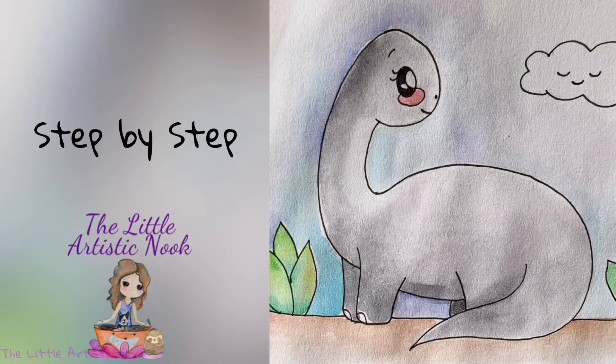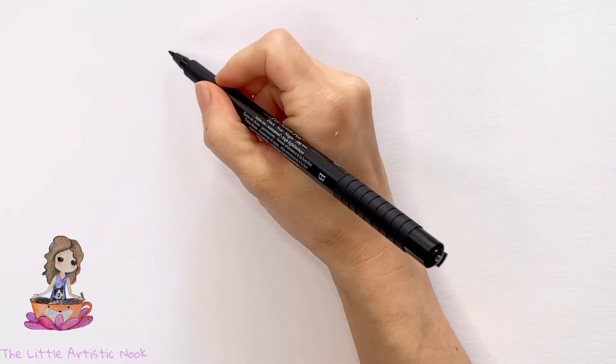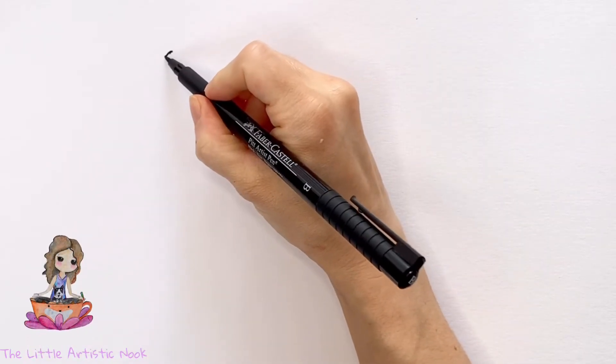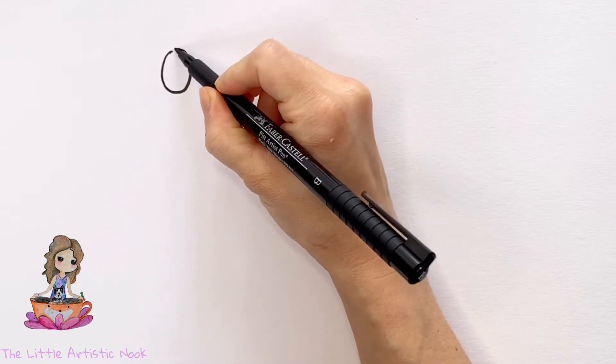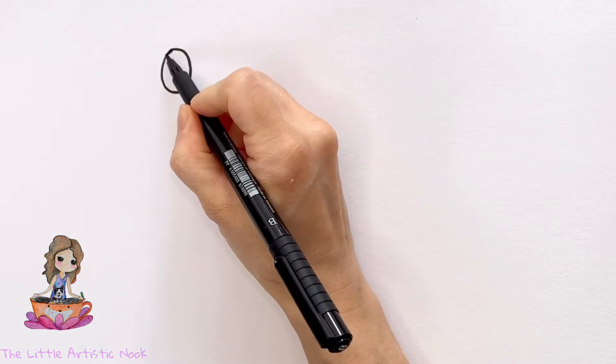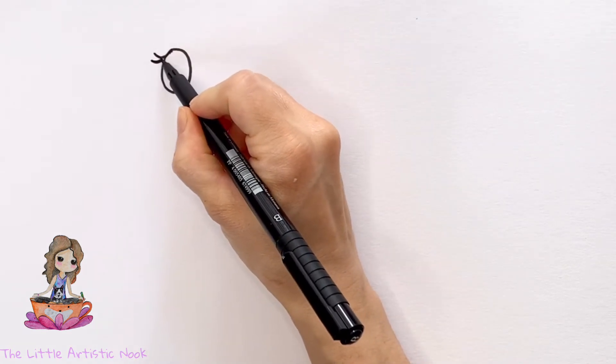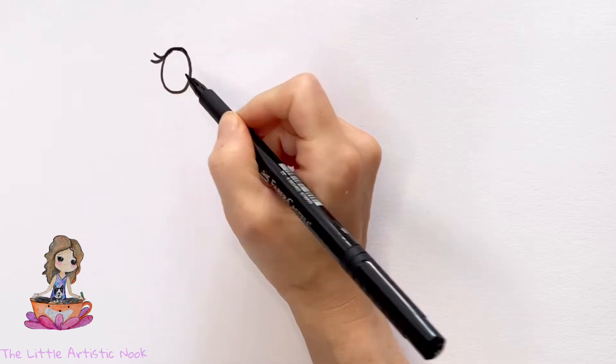To begin, draw out an oval for your brontosaurus's eye near the top left of your page. Next, trace over the top of the eye and extend two lines for eyelashes towards the left side.